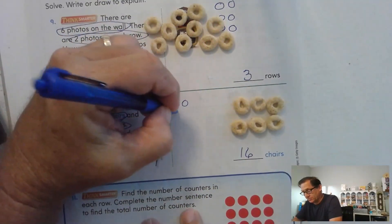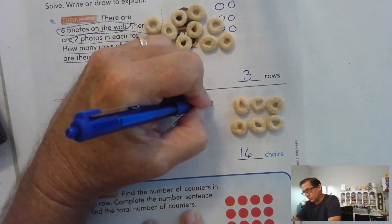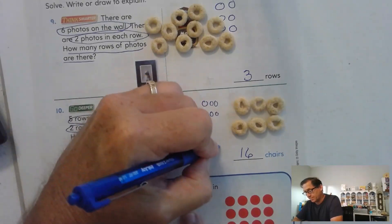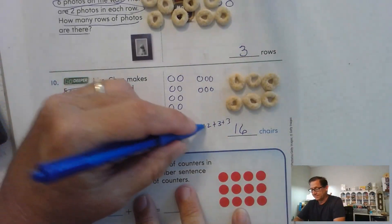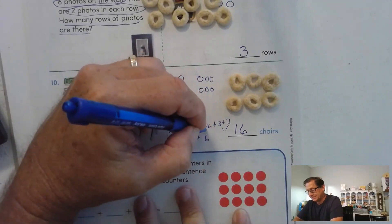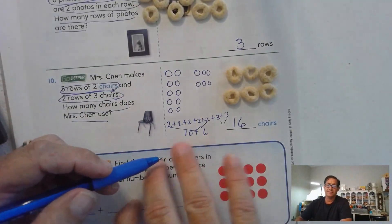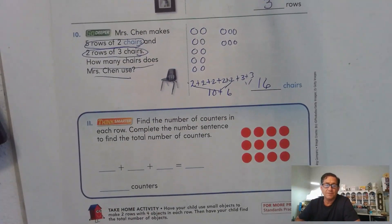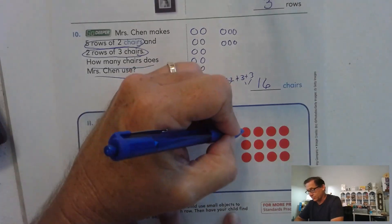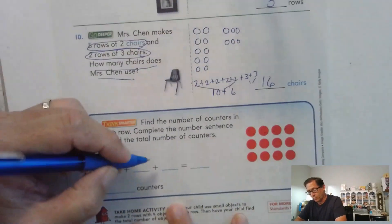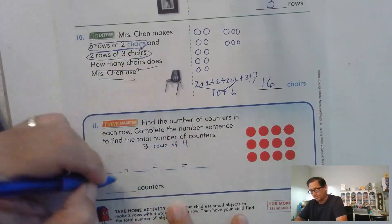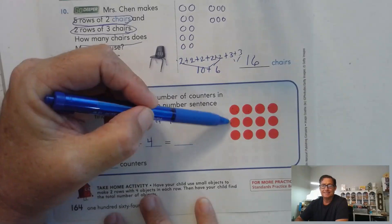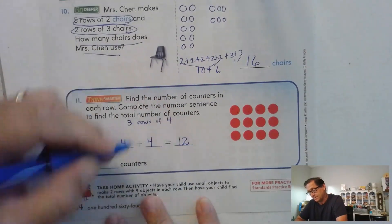We can show that as five rows of two plus two rows of three: two plus two plus two plus two plus two, plus three plus three. Two, four, six, eight, ten, plus six equals sixteen. Five rows of two is ten, two rows of three is six, ten plus six is sixteen. Now find the number of counters in each row and complete the number sentence. We have three rows with four in each row — three rows of four. Skip counting: four, eight, twelve. Twelve counters.